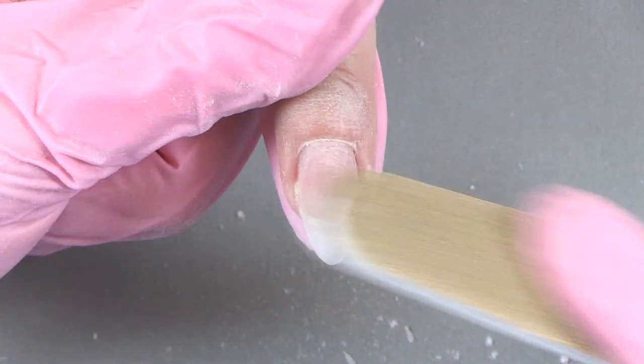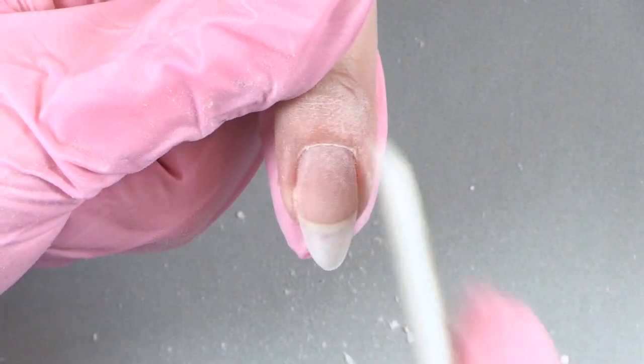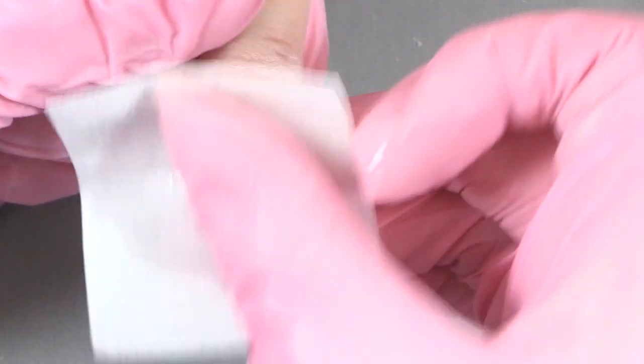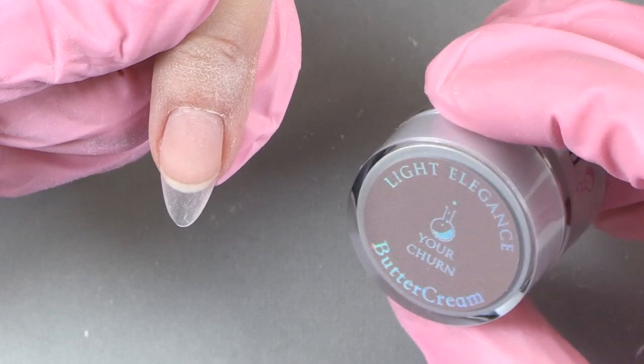Keep in mind to keep that curve and arch in that nail also. Now we're taking the Light Elegance foamy and smoothing it out. Dust it off. Now we're going to cleanse that nail. It's ready for the application of buttercream.